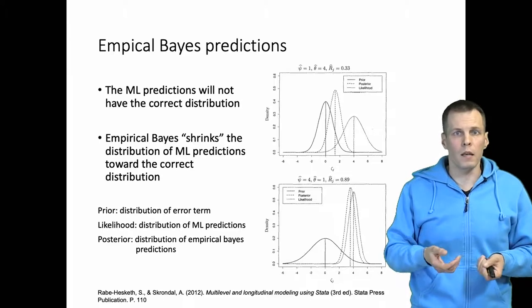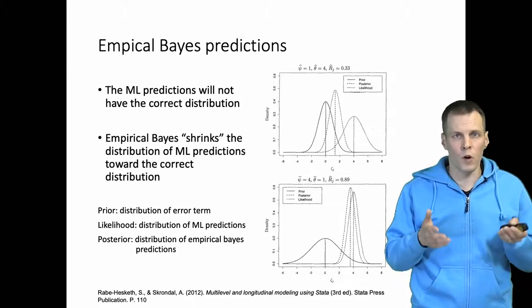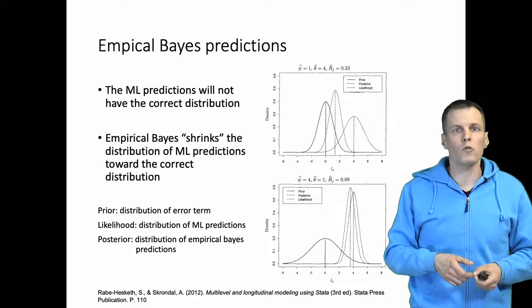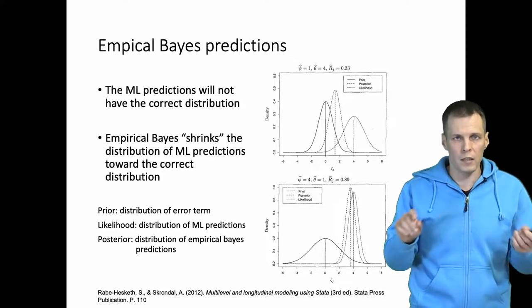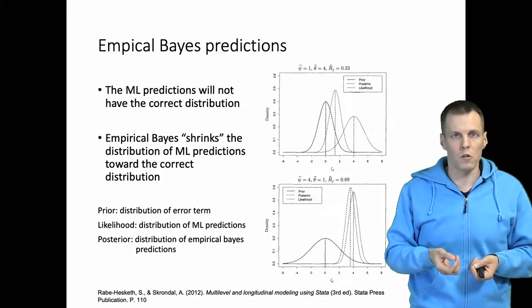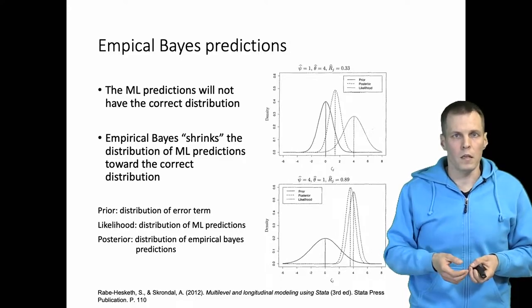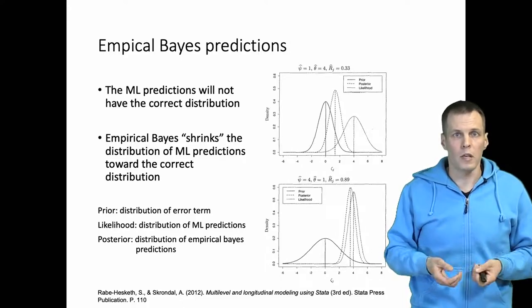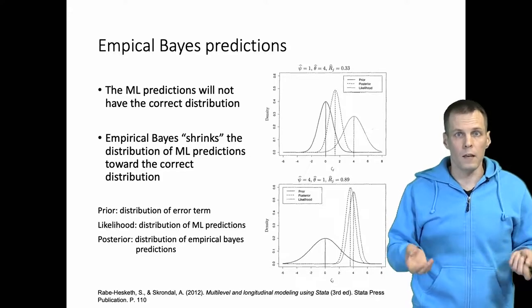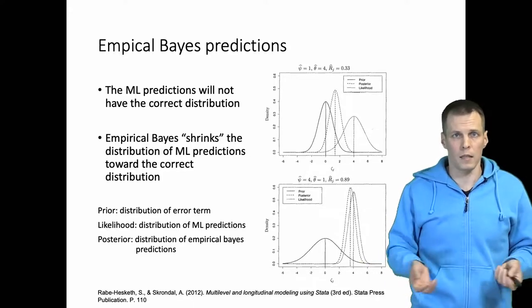In practice in research applications when we try to write the journal paper we are almost always interested in trends in the data and not individual observations. So the empirical Bayes estimation of random effects is superior for that purpose and that is in fact default in many statistical software.